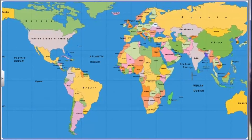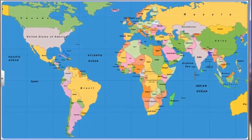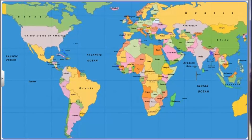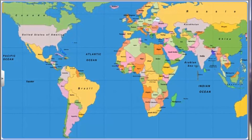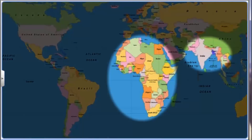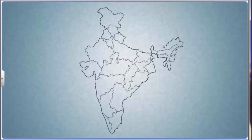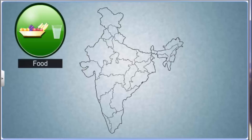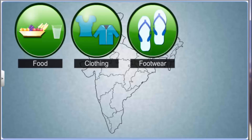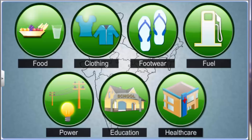Poverty exists in all countries of the world. However, the minimum levels of requirement to determine the poverty line are different in different countries. While in rich developed nations a person may be considered poor for not owning a vehicle or a house, in developing nations not being able to buy two meals a day may be the criterion for poverty. In India, the determination of the poverty line takes into consideration the minimum requirements of food, clothing, footwear, fuel, power, education and health care for the subsistence of an individual.